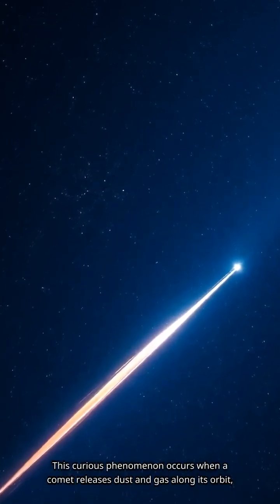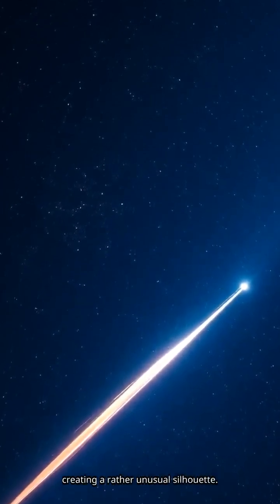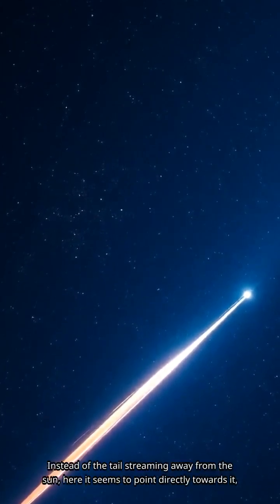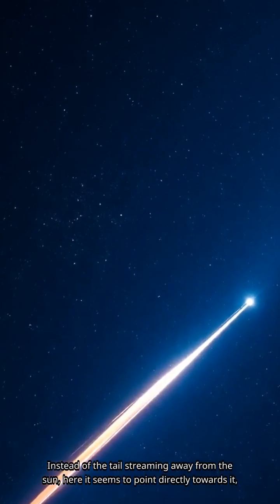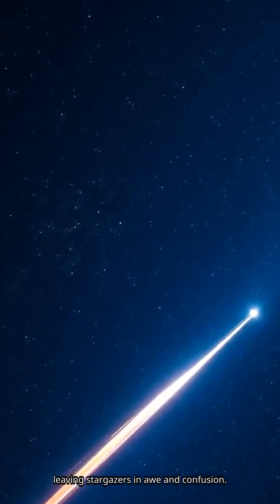This curious phenomenon occurs when a comet releases dust and gas along its orbit, creating a rather unusual silhouette. Instead of the tail streaming away from the sun, here it seems to point directly towards it, leaving stargazers in awe and confusion.